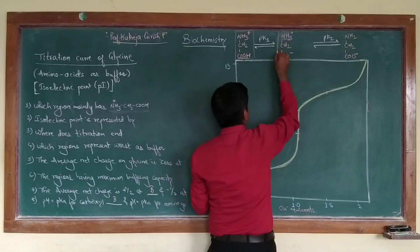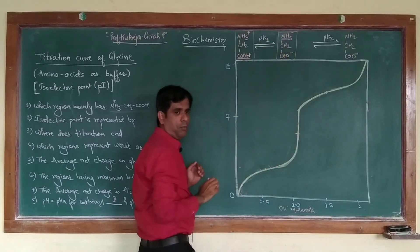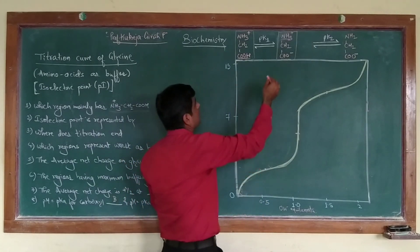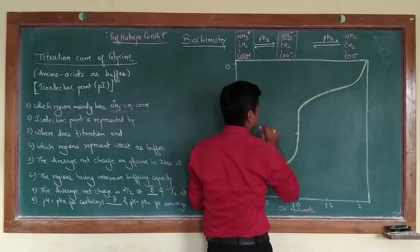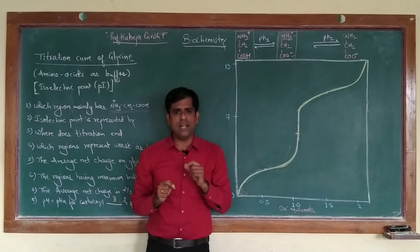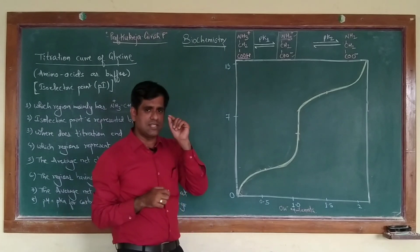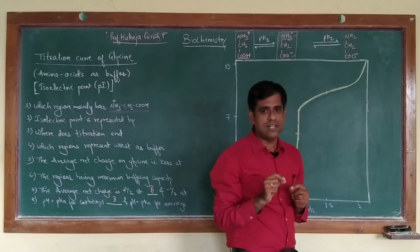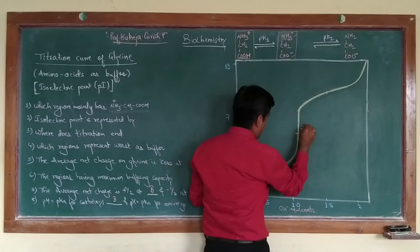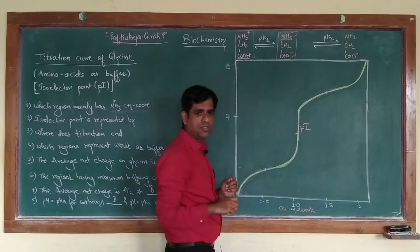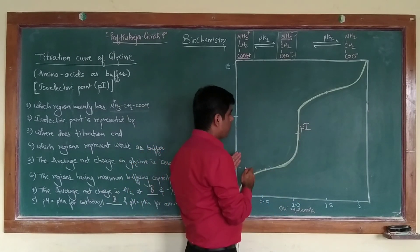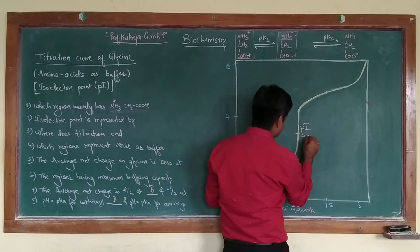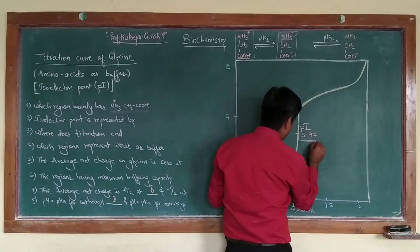At this particular point, there is a complete dissociation of the COOH to form COO minus, and the amino acid occurs in its zwitterionic form. The zwitterionic form is a form where the amino group has a positive charge and the carboxyl group has a negative charge, so the net charge on the amino acid is 0. This particular pH where the net charge on the amino acid is 0 is referred to as its isoelectric point, or PI, which corresponds to a pH of around 5.97.